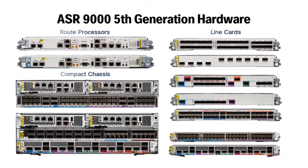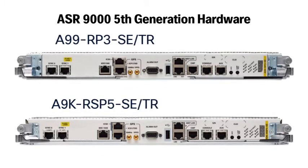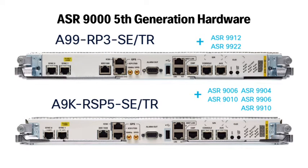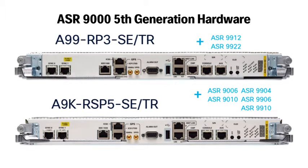First up we have the new route processors, the RP3 and RSP5. The RP3 works in ASR9912 and 9922 chassis, and the RSP5 works in all the others listed on the screen. The major difference is that the RSP5 integrates the switch fabric on the route processor board, making it a route switch processor — hence the 'S' in RSP. The RP3 does not include the switch fabric because it's used in higher throughput chassis where the switch fabric is separated out into its own module.